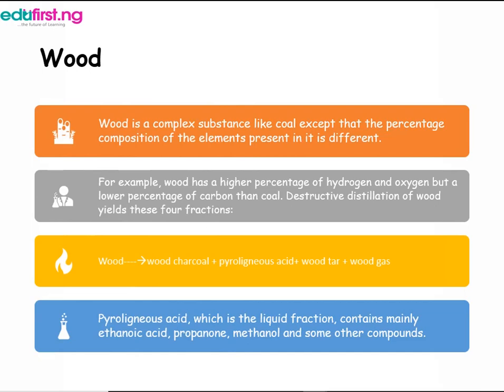Now we move to the destructive distillation of wood. Wood is a complex substance like coal, except that the percentage composition of the elements present in it is different. For example, wood has a higher percentage of hydrogen and oxygen but a lower percentage of carbon than coal.